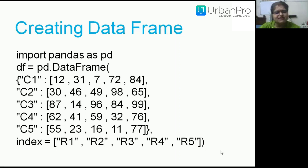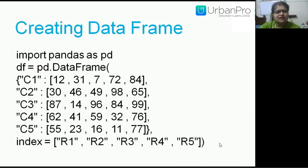I provide column names and the set of data elements. To provide row names, I use the index parameter for the DataFrame function, giving R1, R2, R3, R4, R5 separated by commas. This is how I create the data frame.